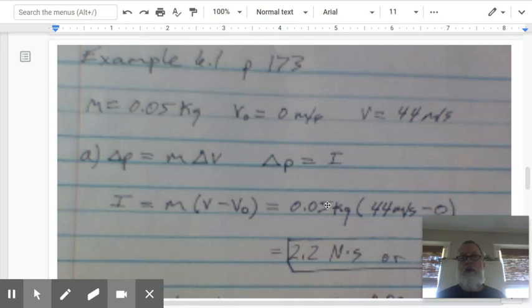Let's look at a couple example problems. First, example problem 6.1. In this case, we have a golf ball that has a mass of 0.05 kilograms. Its initial velocity sitting on the tee is 0 meters per second. When it leaves the golf club, it will leave with a velocity of 44 meters per second. The question is to figure out what the impulse is on the golf ball.